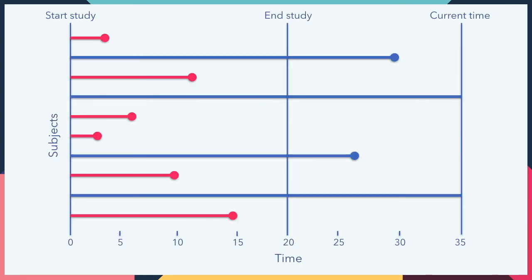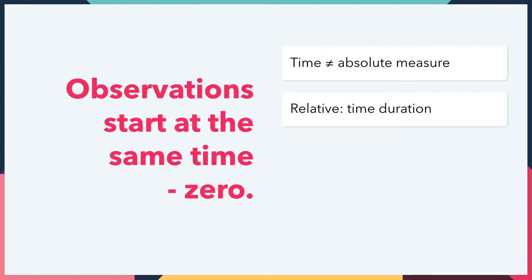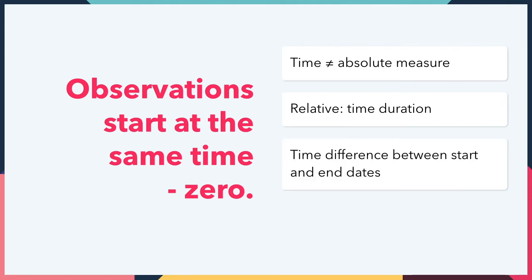Secondly, and most importantly, in the examples presented previously, we start observing our population all at the same time t zero, which we can set to zero for convenience. However, time does not have to be an absolute measure — it can instead be relative by using a time duration. In this case, individuals can start at different times relative to each other, but we measure the time difference between each individual's start and end dates. Again, this is relevant for the case of turnover, since this is the definition of tenure.